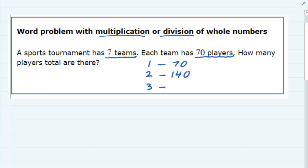Three teams, we would have 70 on the first team, 70 on the second team, 70 on the third team. So we're up to 210.